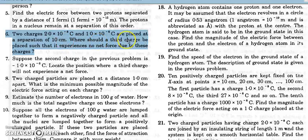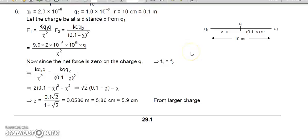In this question we have to find where the third charge should be placed so that it doesn't experience any force because of two charges placed at a separation of 10 centimeters. Both charges are positive, so the third charge must be placed somewhere in between them, because the forces have to cancel each other — they must be in opposite directions and equal in magnitude. Let's say it is placed at a distance x from one charge.